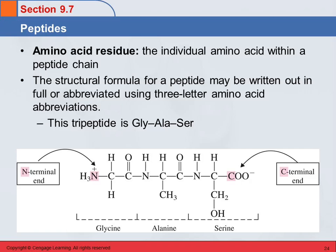When we talk about an amino acid residue, we mean the individual amino acid within a peptide chain. So this is one amino acid residue. It's not really accurate to say that it is an amino acid anymore, right? Because it's missing its OH over here and it's missing its H over here. But it's the residue. It's what's left when an amino acid forms an amide bond and becomes part of a peptide.